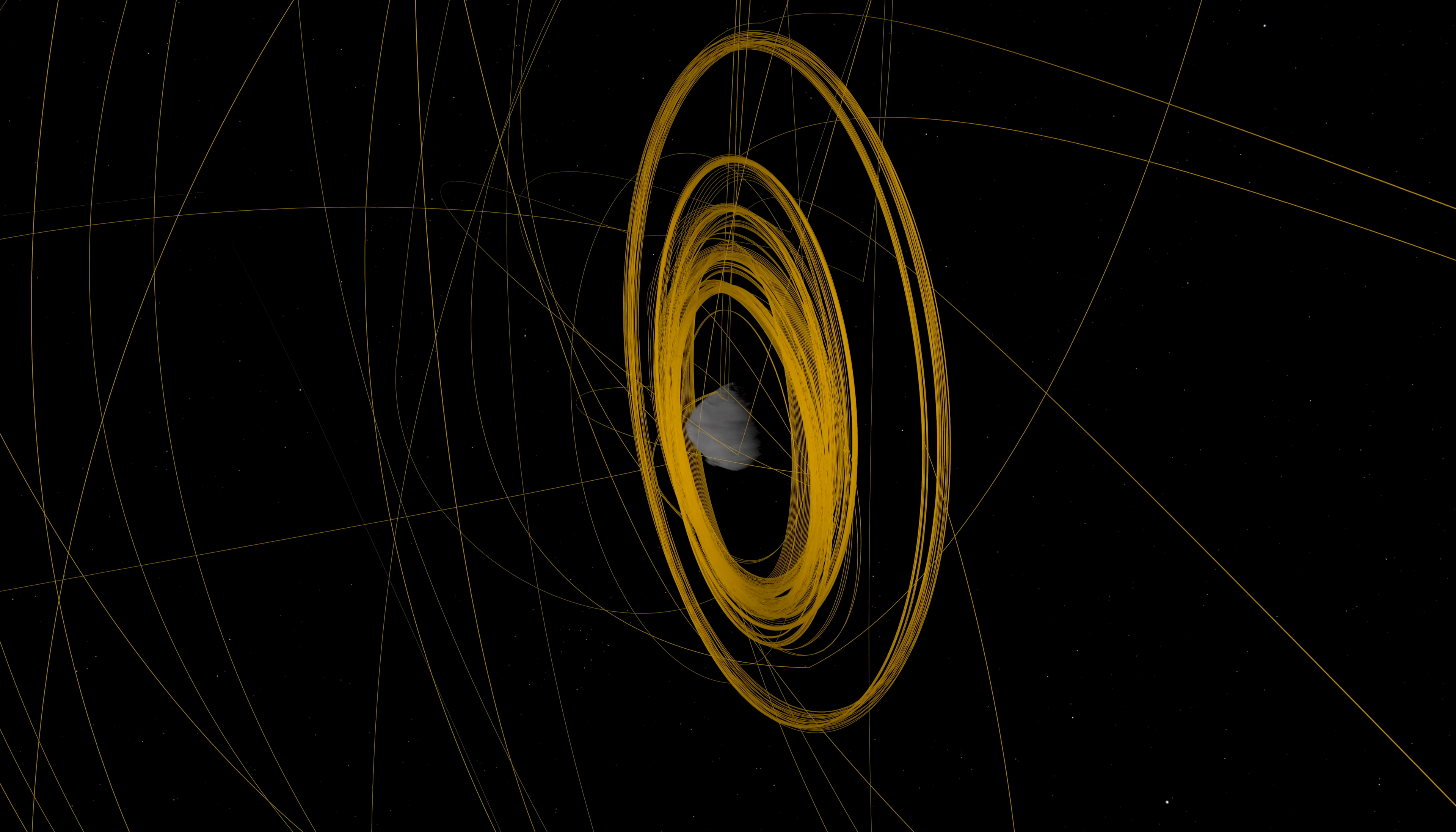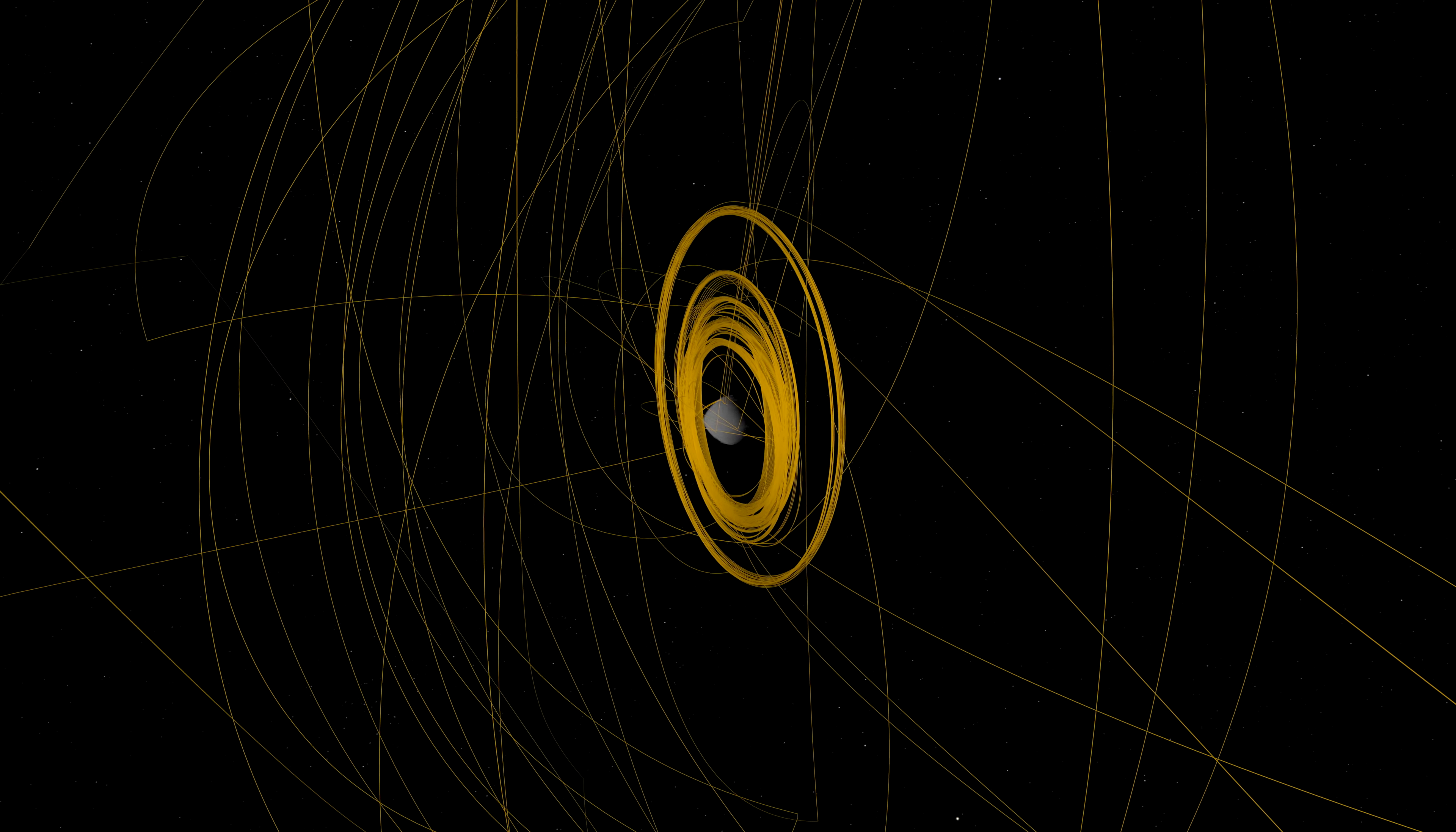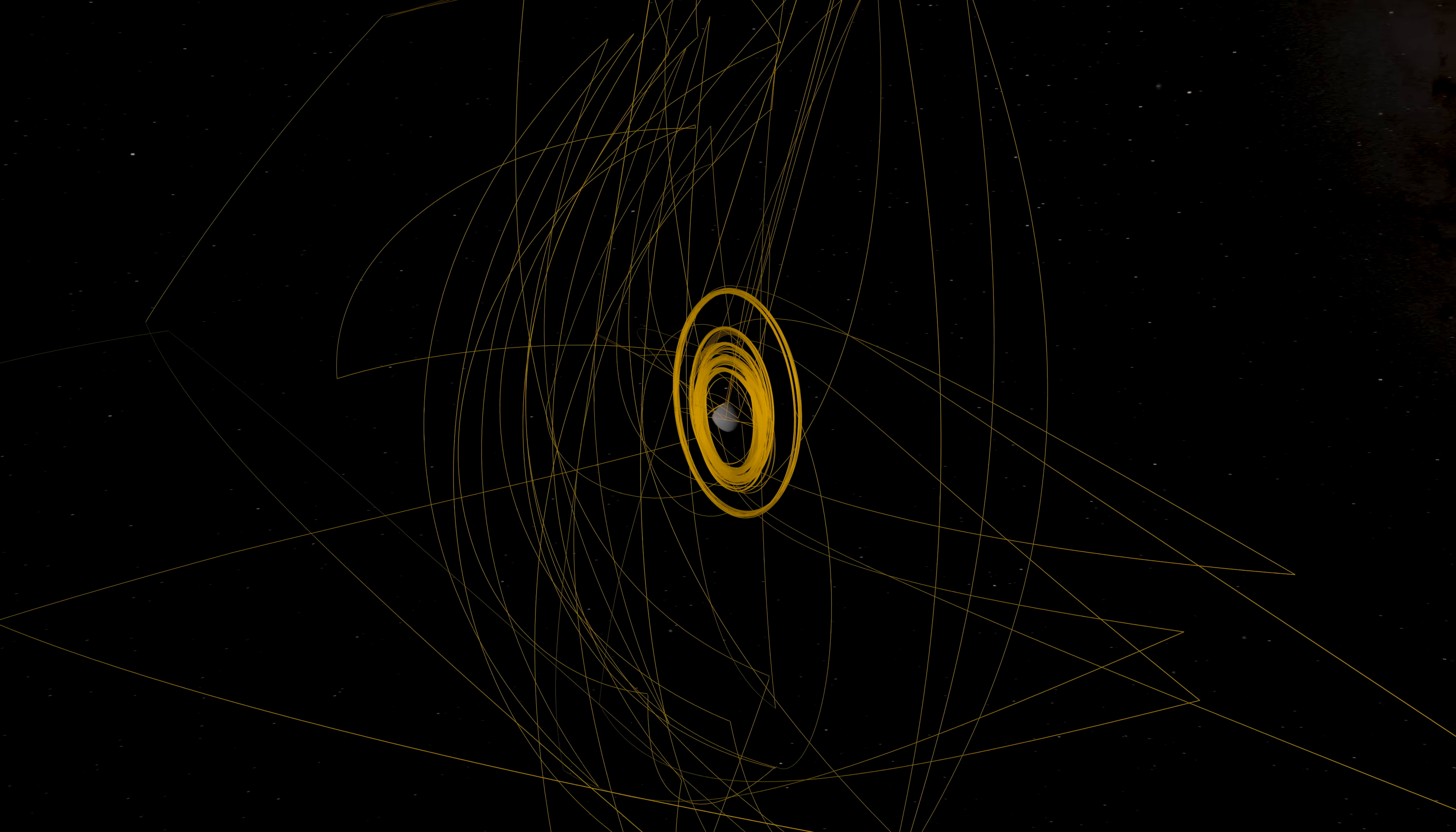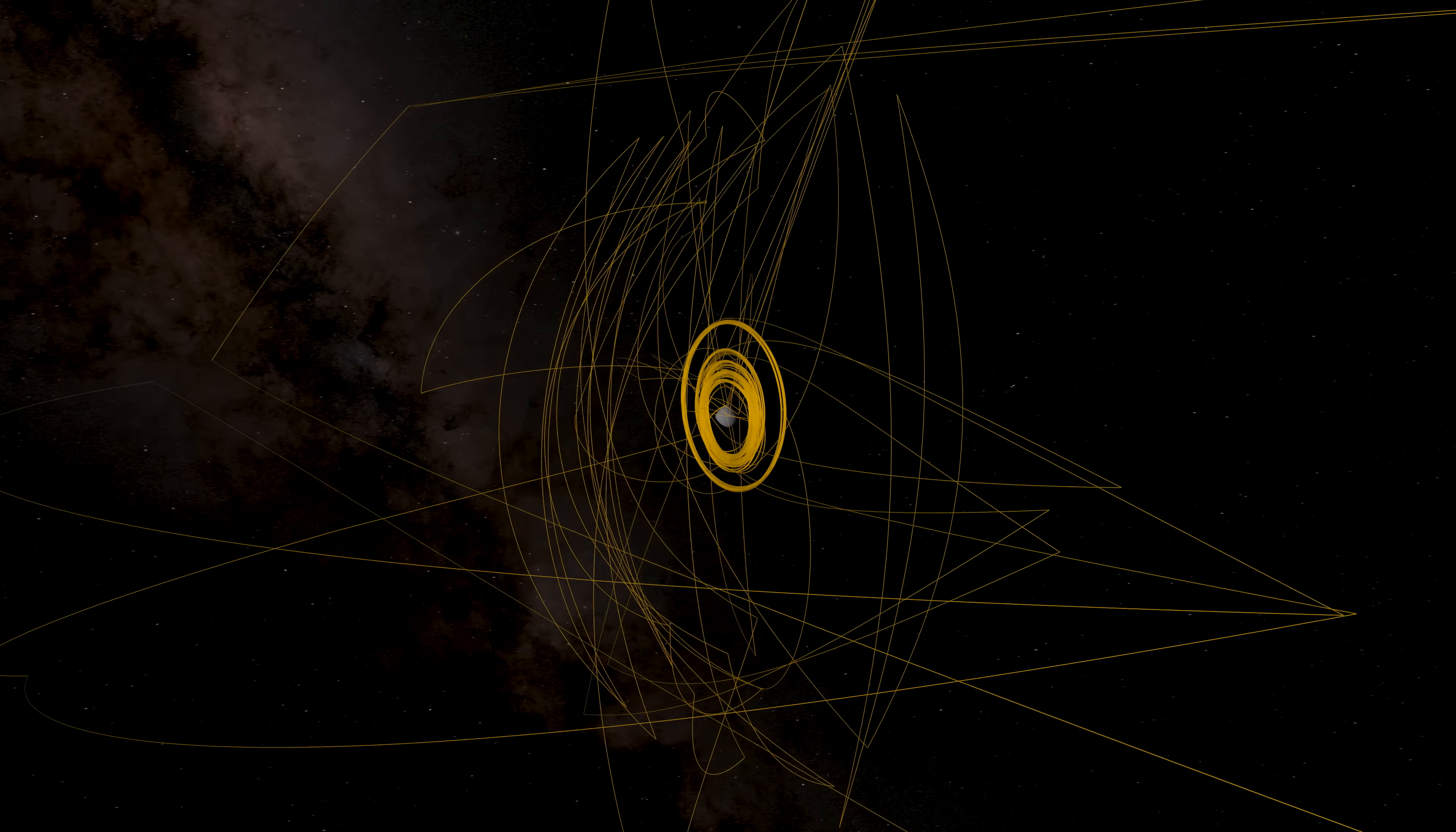Following TAG, the spacecraft drifted to a safe distance away from Bennu. By the end of October, mission controllers determined that it had exceeded its goal of collecting 60 grams of asteroid material. They directed it to stow the sample in preparation for return to Earth.